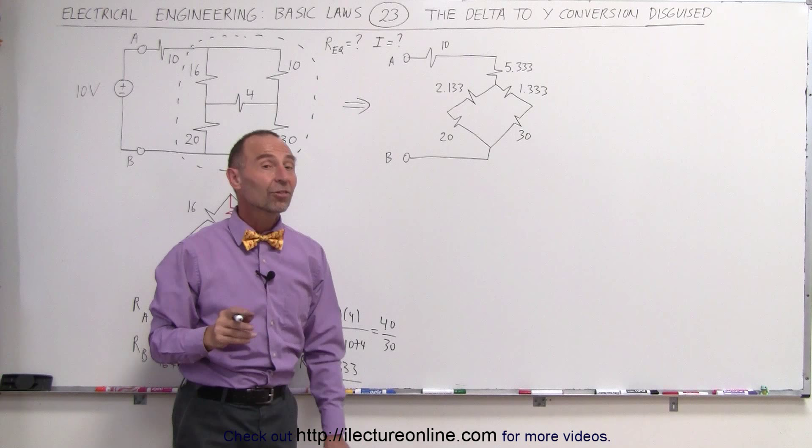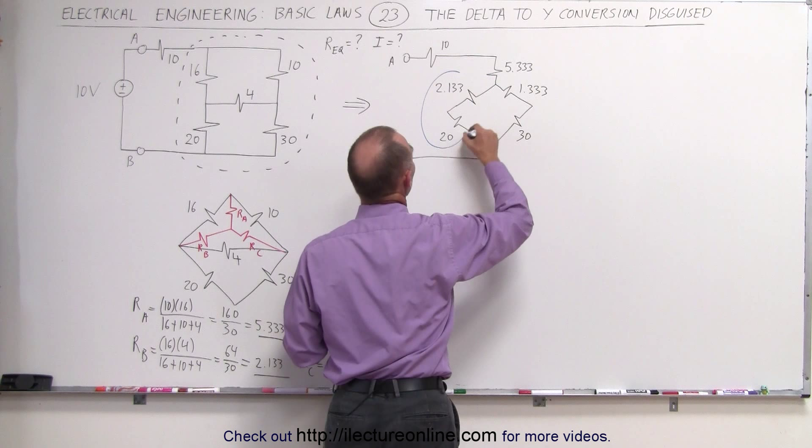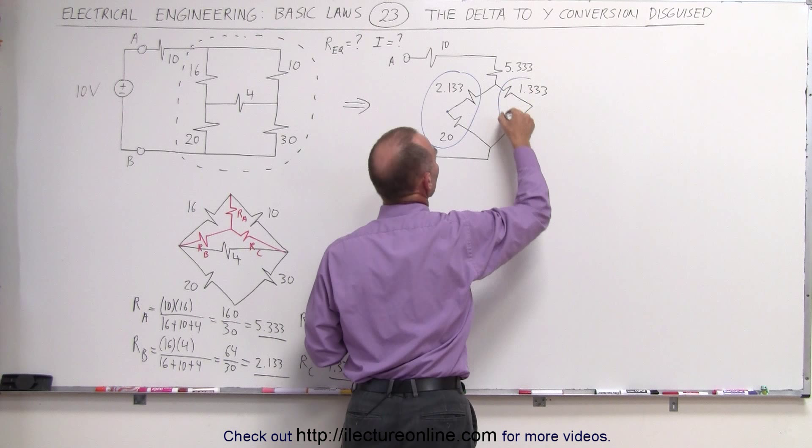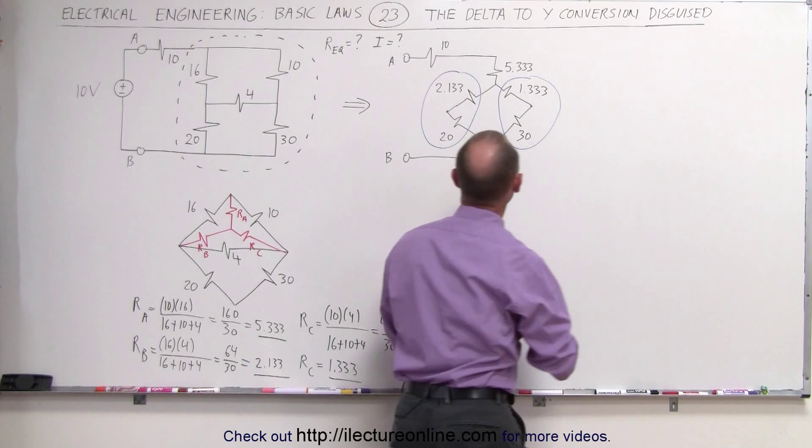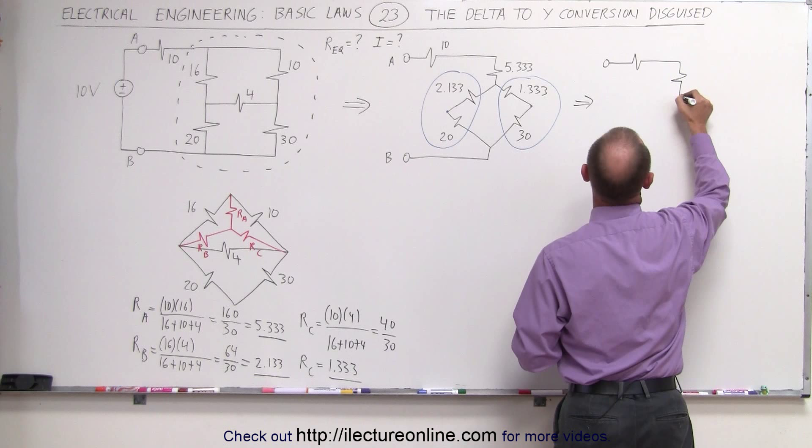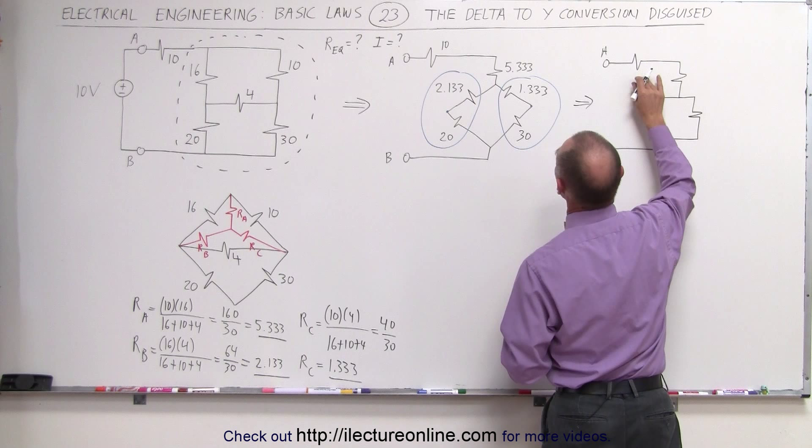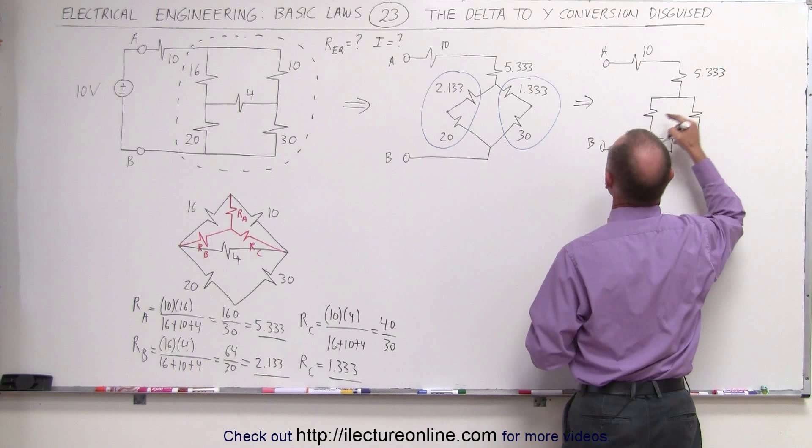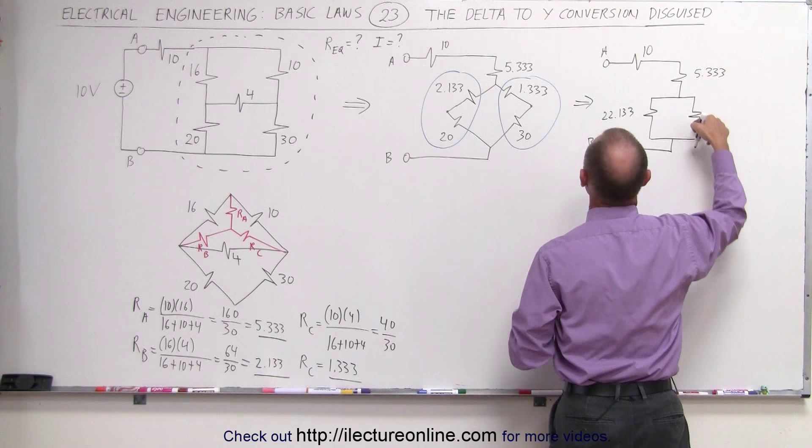Now this is a lot easier to solve because you can combine these two resistors. They are now in series because they share a common node exclusively. These two are in series because they share a common node exclusively. The new equivalent circuit will now look like this. This is our A terminal, our B terminal. This here is the 10-ohm resistor. We still have the 5.333-ohm resistor. This becomes the sum of those two, which is 22.133. This becomes the sum of those two, which is 30.133.